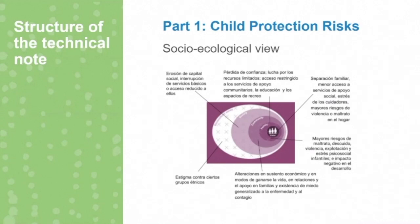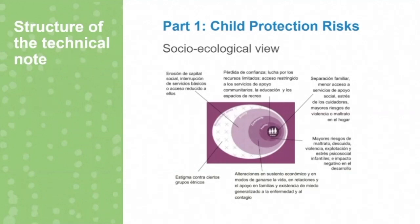The technical note starts by describing how the social ecology of the child — which is basically a child at the center, the family, community, society, and the larger sociocultural norms — gets affected by a pandemic such as COVID-19. At the child level, we have different risks: issues of separation and increased levels of stress. At the family level, issues such as loss of income, not having access to child care — up to 1.5 billion children are now out of school — and quarantine measures do not allow families to have any external help, even sometimes from their extended family.